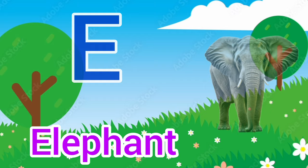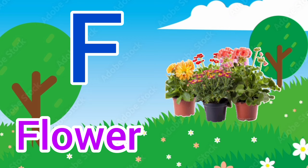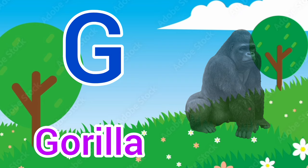F. F for flower, flower means pool. G. G for gorilla, gorilla means gorilla.